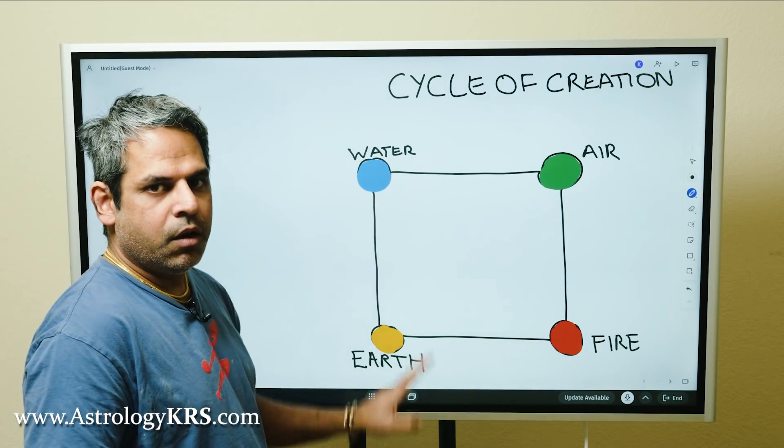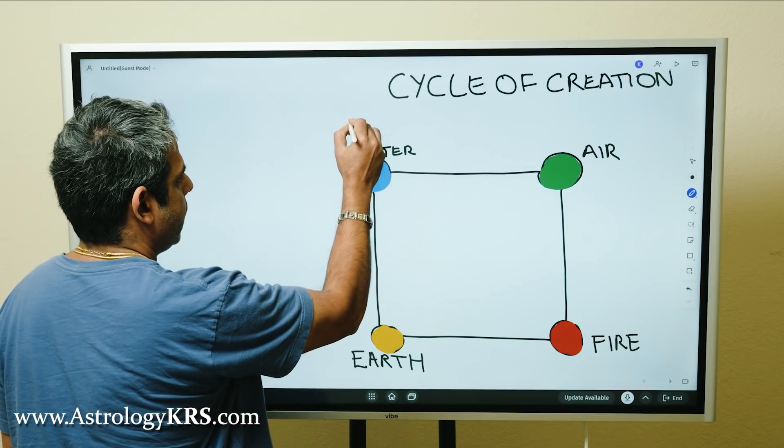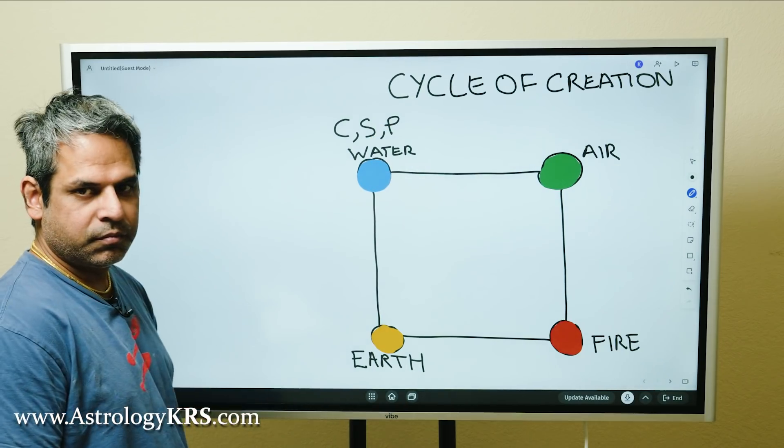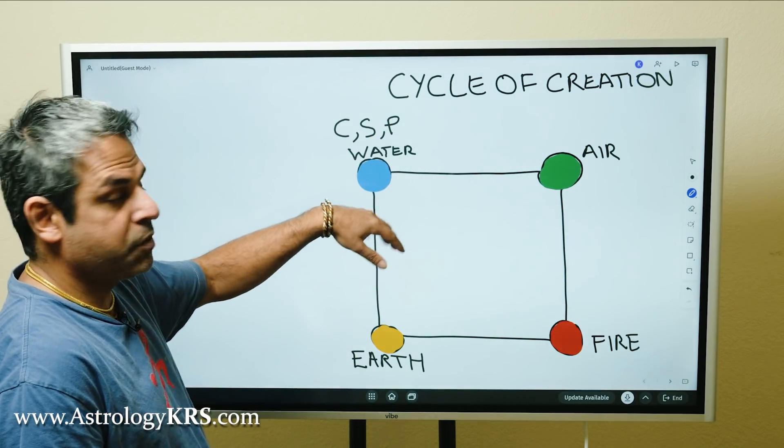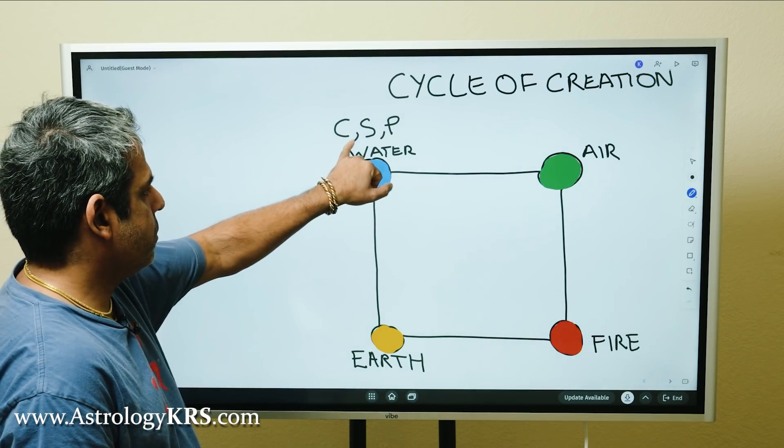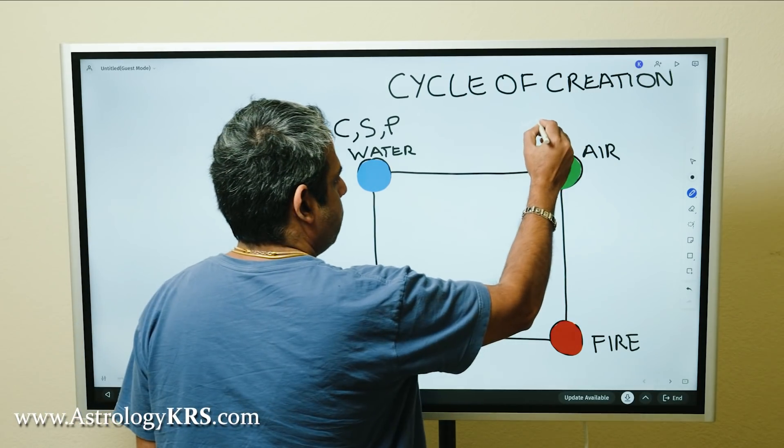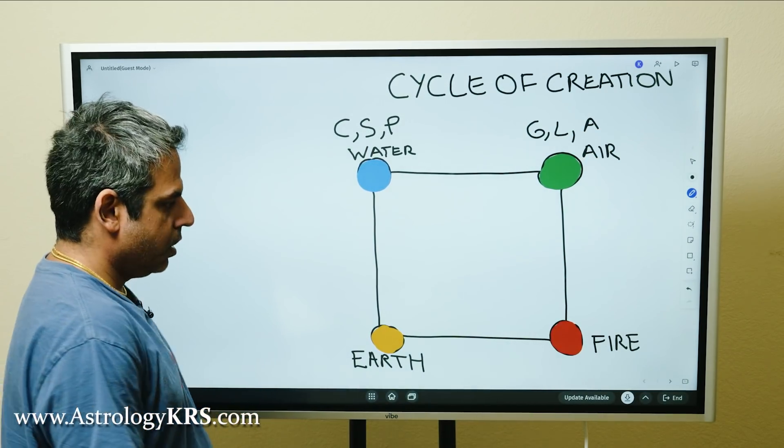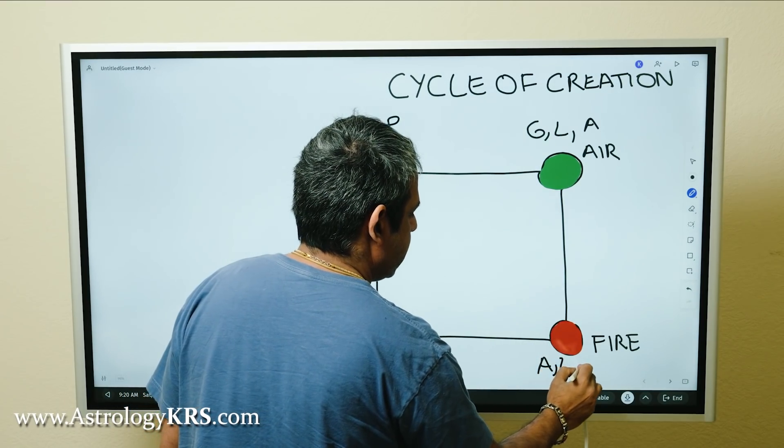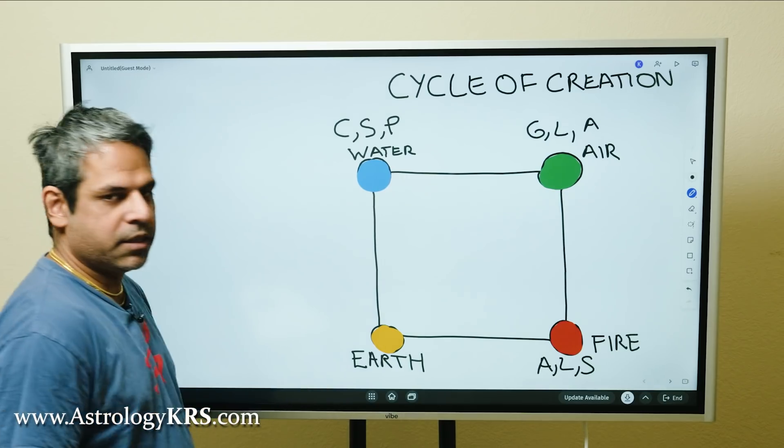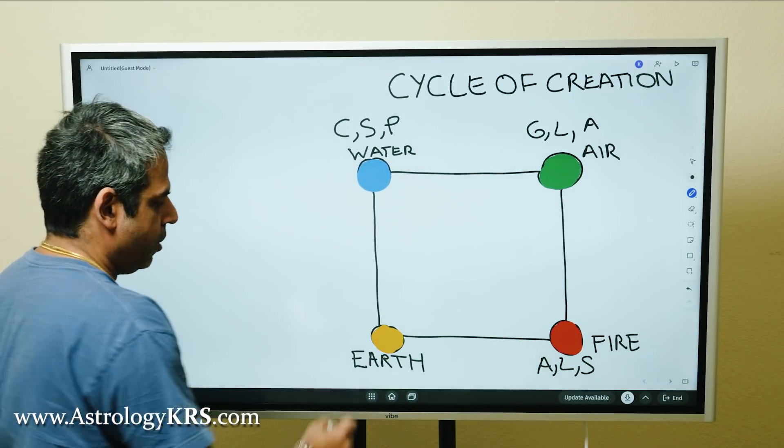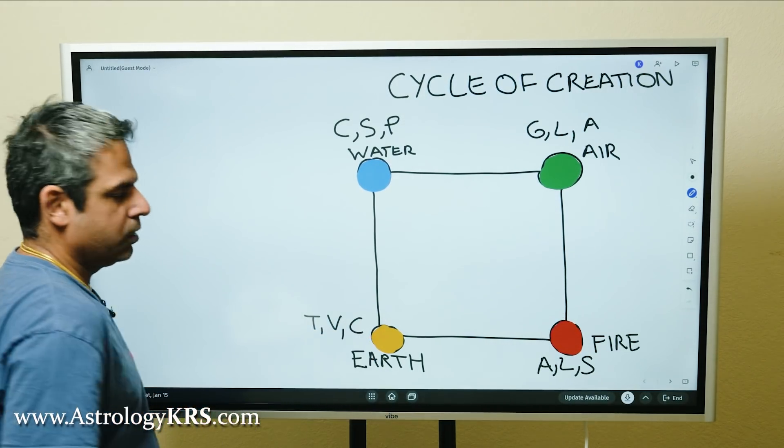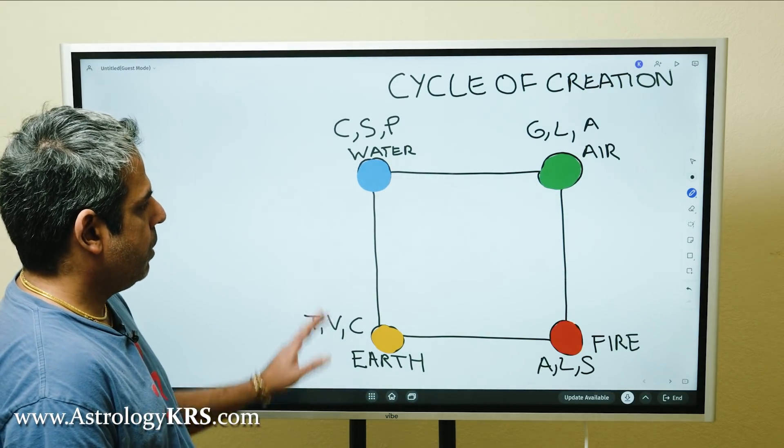Water signs are represented by Cancer, Scorpio, and Pisces. Air would be Gemini, Libra, and Aquarius. Fire would be Aries, Leo, and Sagittarius. And earth would be Taurus, Virgo, and Capricorn.